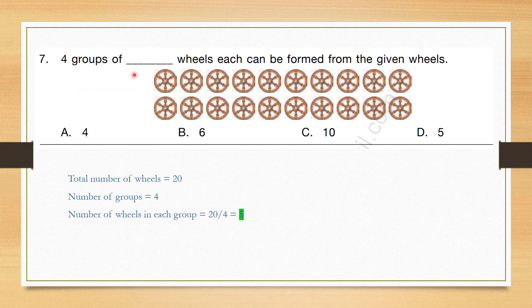Question number 7: Four groups of blank wheels each can be formed from the given. We have to make four groups and the total number of wheels is 20. So 20 divided by 4 equals 5 — there will be five wheels in each group. Correct answer is option D, 5.